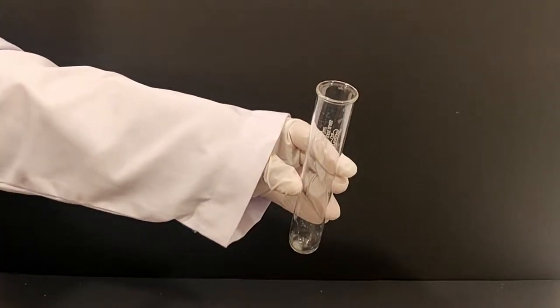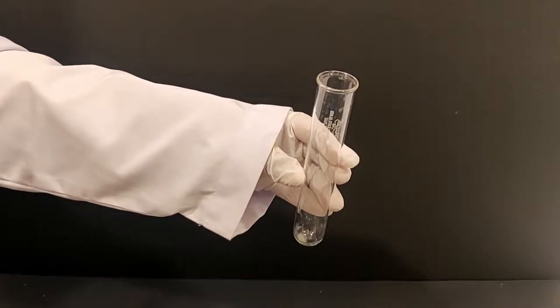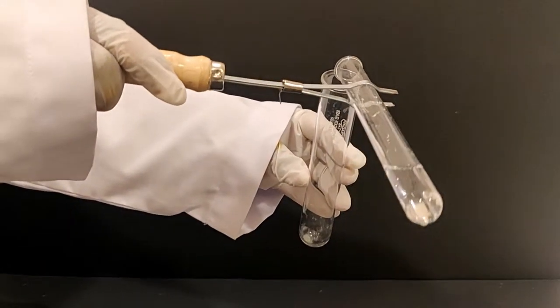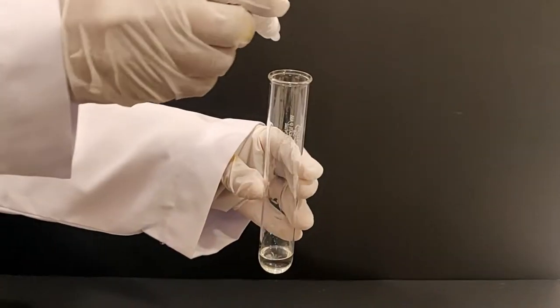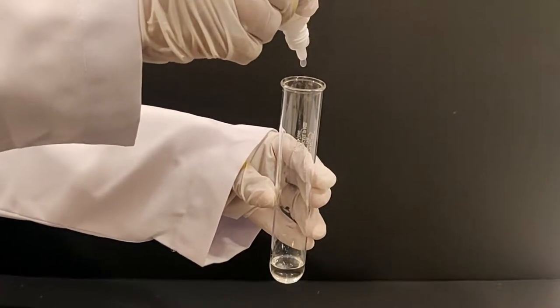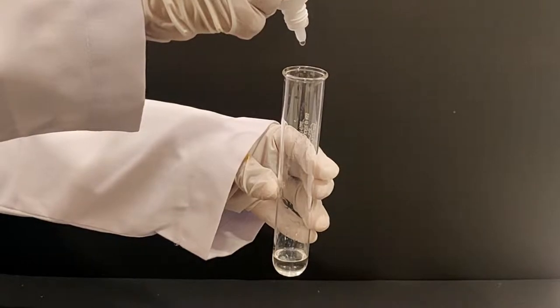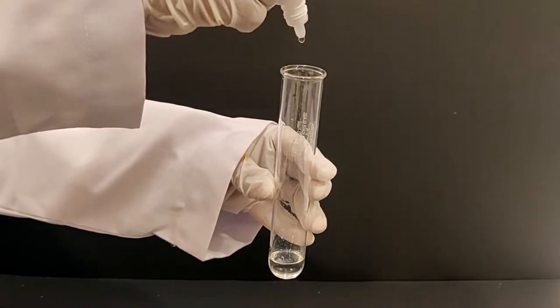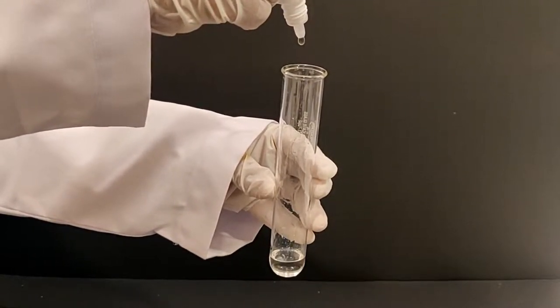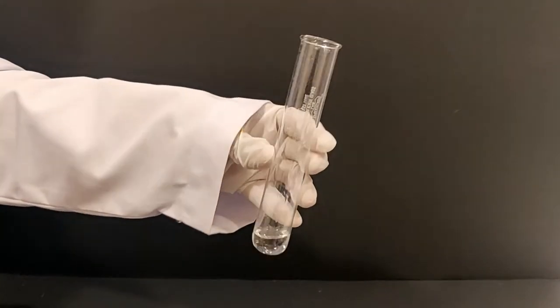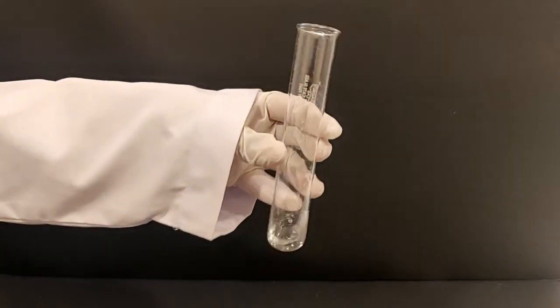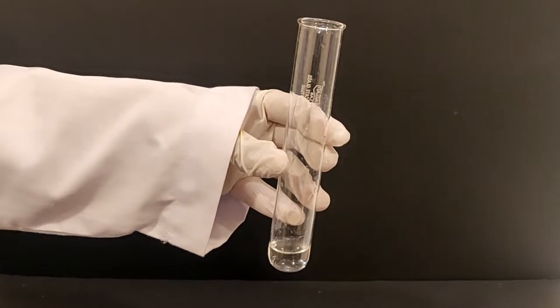In a boiling tube, add about one fourth test tube full of dilute hydrochloric acid. Add about four to five drops of the phenolphthalein indicator to the test tube and gently swirl the test tube to ensure the indicator is fully mixed with the acid.